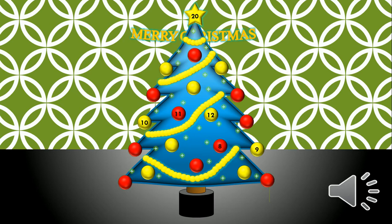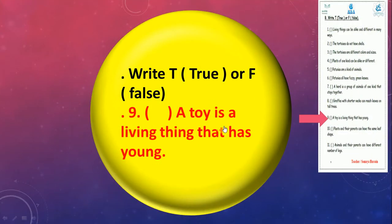Super, okay, number eight. A toy is a living thing that has young. Oh really, do you think a toy is a living thing that has young? Mother and father, we call them toy? No, of course not. We call them parents, so we're gonna write F.